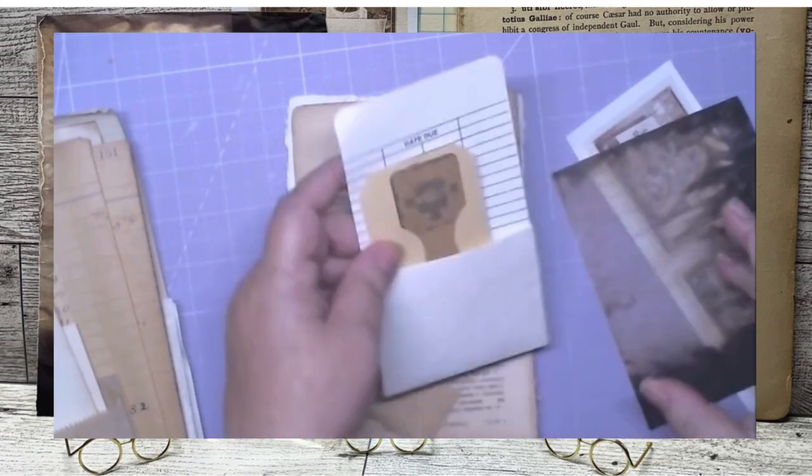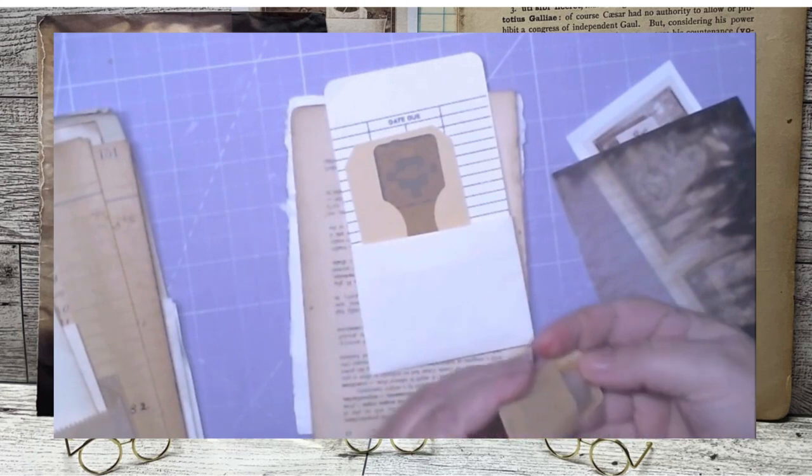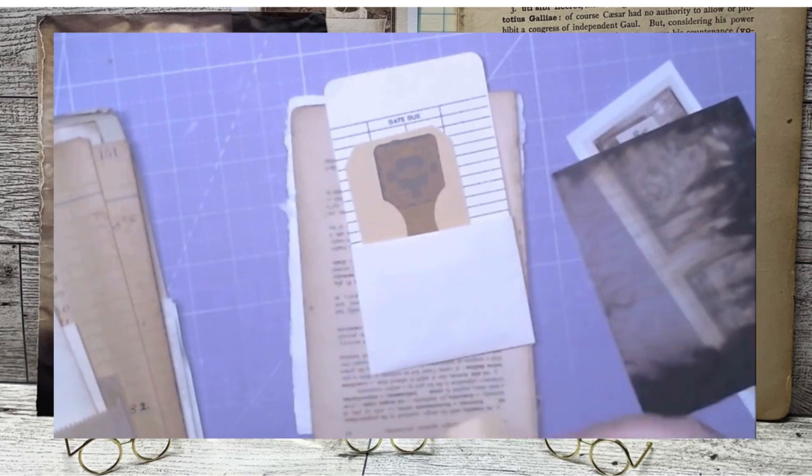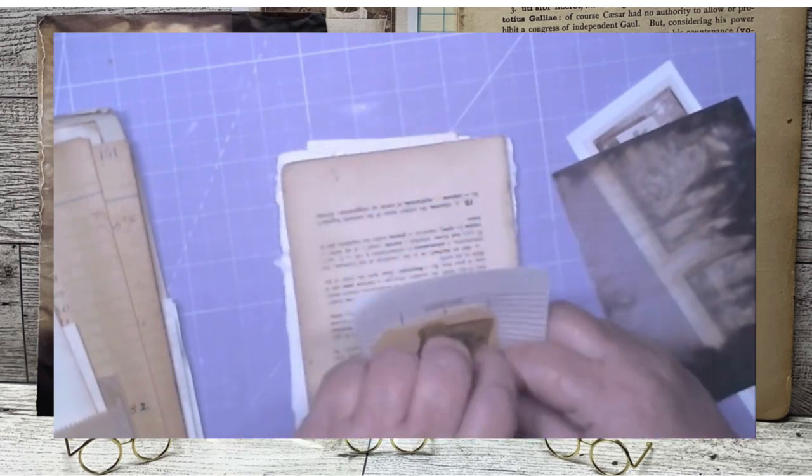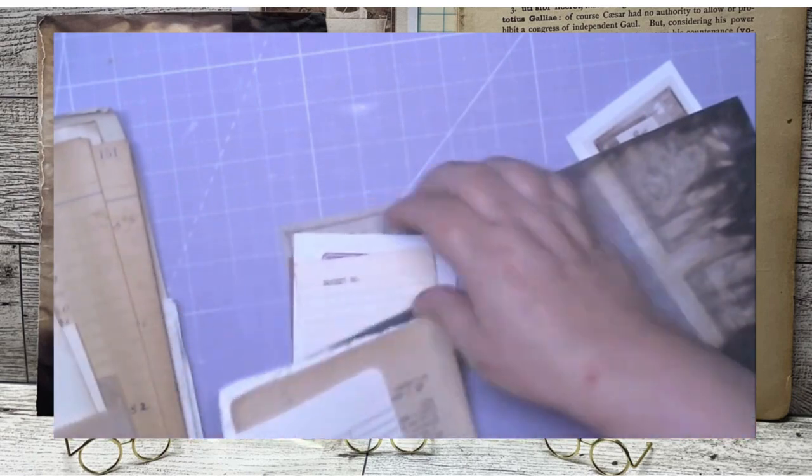And we're going to go in here and see what we have. Magnets, so magnets for the journal. We'll see what I use them for. I'm going to put this all back in the bag here.